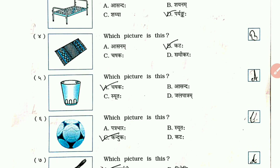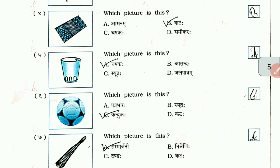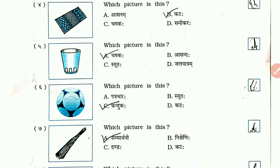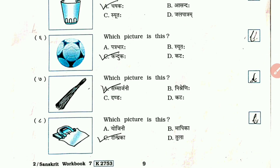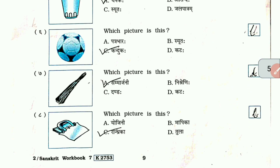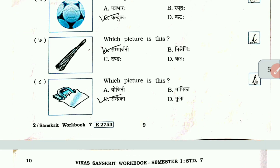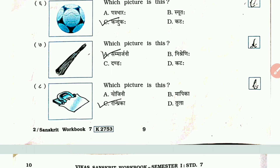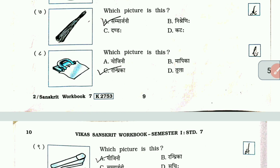Number 4: which picture is this? The answer is option B — Kata. Number 5: which picture is this? The answer is Chaska. Number 6: which picture is this? The answer is Kanduka, option C. Number 7: which picture is this? The answer is Samarginim, option A.